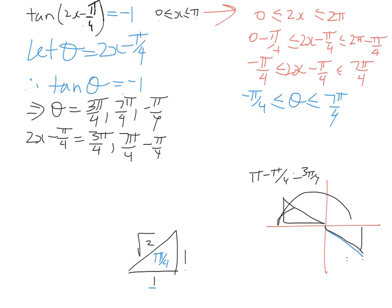So from there to solve for x, we transpose this -π/4. So we've got 2x equals 3π/4 plus π/4 to give us π, 7π/4 plus π/4 to give us 2π, and -π/4 plus π/4 to give us 0. To solve for x, we've got to divide everything by 2. So now we've got π/2, π and 0.